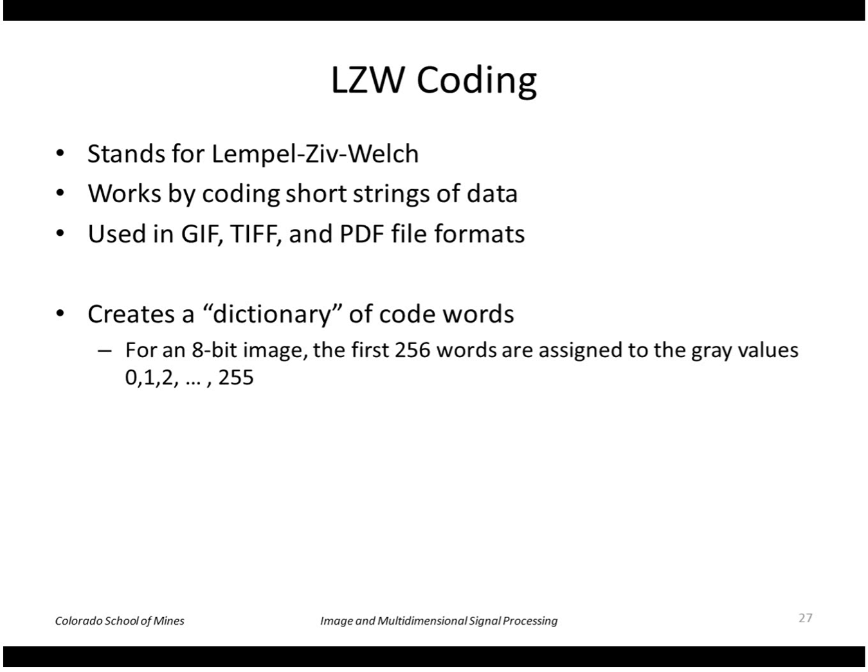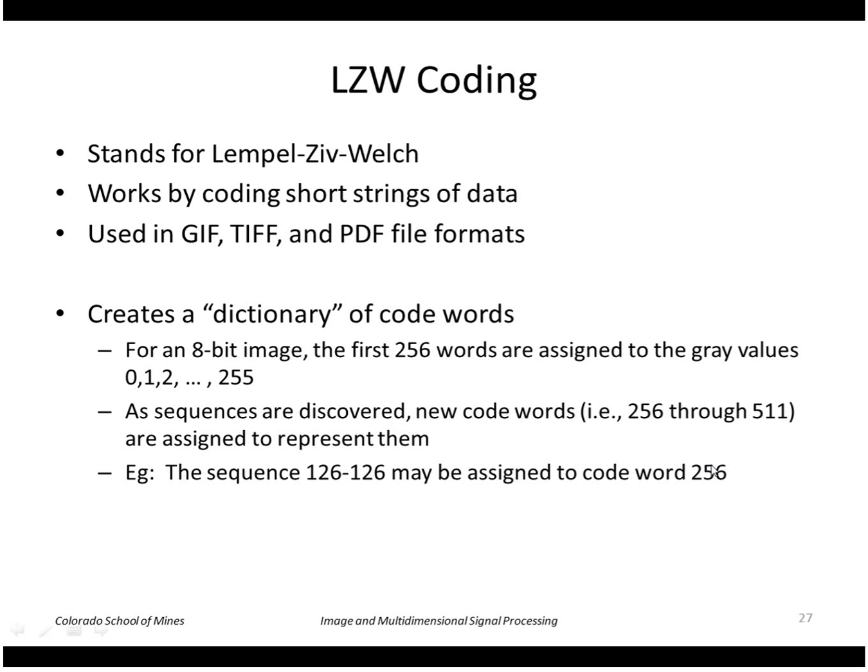It uses a dictionary of 512 words, and for an 8-bit image, the first 256 words are assigned to the values 0 through 255. As sequences are discovered, new code words are assigned to the values 256 through 511. For example, the code word 256 might represent the sequence 126 126.